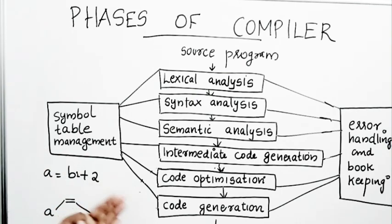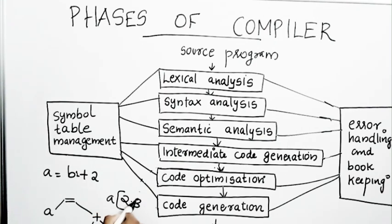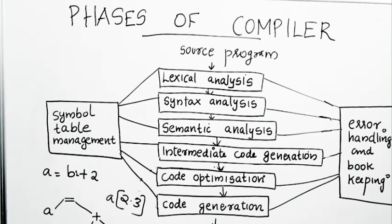In the syntax tree, all operators act as parents and operands act as children. This syntax tree is the output of syntax analysis, which is passed to the semantic analysis phase. Semantic analysis collects type information for all variables and performs necessary type conversions. It also reports type-related errors — for example, using '2.3' as an array index is invalid. If 'a' and 'b1' are floating point numbers, '2' will also be converted to floating point.